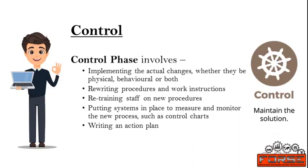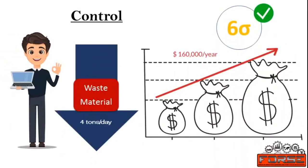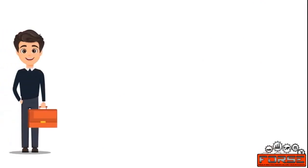Once the improvements were incorporated, it was time for the Control phase. The Control phase ensures the solution is properly implemented, documented, measured, and maintained. It involves implementing the actual changes — whether physical, behavioral, or both — rewriting procedures and work instructions, retraining staff on new procedures, putting systems in place to measure and monitor the new process such as control charts, and writing an action plan. Data collected on the changes in the process showed very significant results. The company reduced the amount of work-off material by four tons per day. After factoring in the cost of improvements to the machinery, the positive impact to the company's bottom line was $160,000 per year. This is how Mr. Smith managed to implement Six Sigma successfully, thereby reducing excess materials significantly.